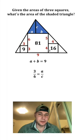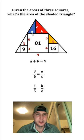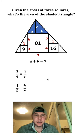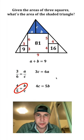And then we can do the same thing for this orange triangle and this red triangle. Since these two triangles are similar, we can also say that 4 over 5 equals B over C. And now let's cross multiply. 3 times C is equal to 6 times A, and 4 times C is equal to 5 times B.